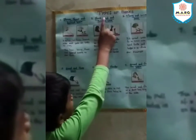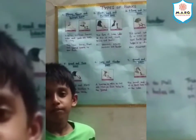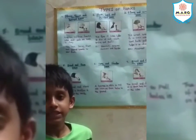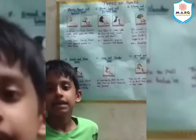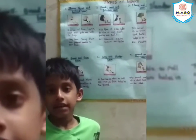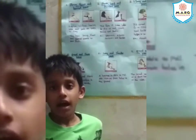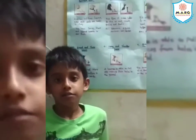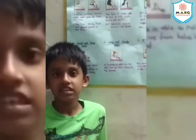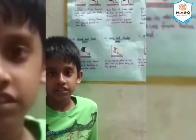Short, hard and pointed beaks: this type of beak helps birds to pick up and crush grains and seeds. Examples: sparrow, pigeon, peacock and finches.